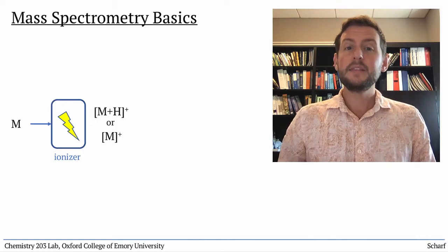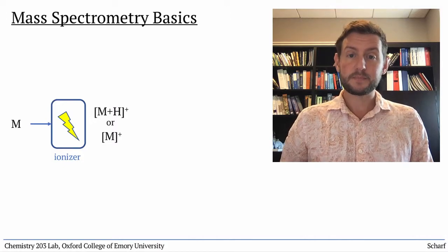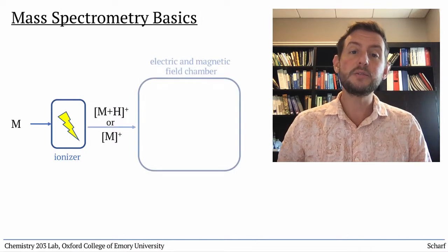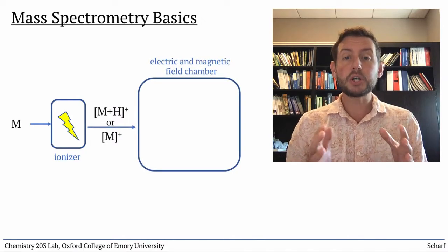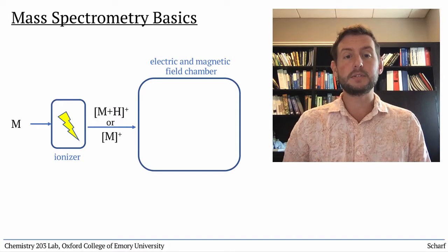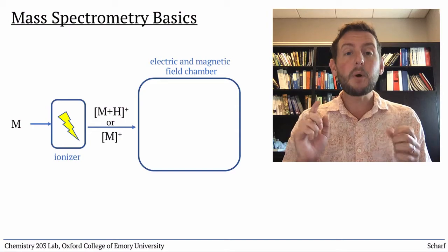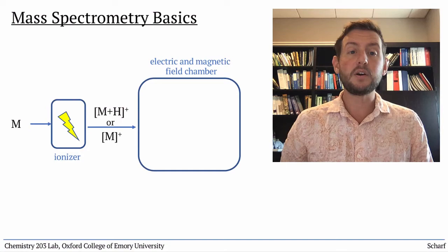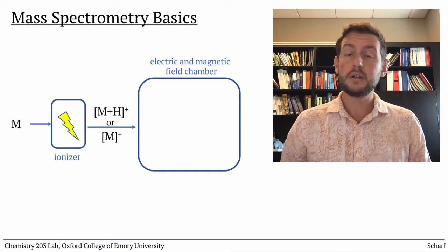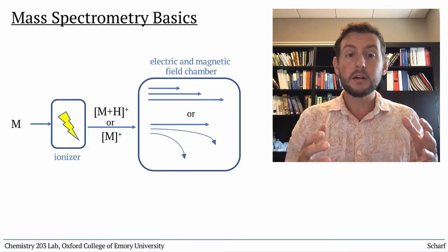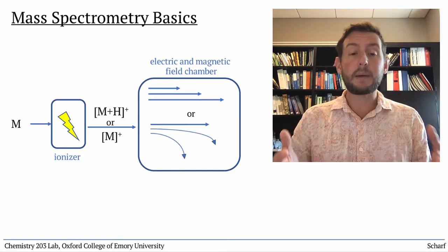Either way, this newly charged species, called the molecular ion, is accelerated into a chamber where its motion is influenced by highly controlled electric and magnetic fields. Because the momentum and trajectory of a charged particle depend on its mass and charge, particles of different masses move differently in the chamber, with different speeds or paths.